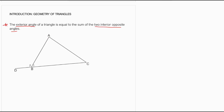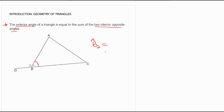The theorem says the exterior angle of a triangle is equal to the sum of the two interior opposite angles. Let's talk about B1. B1 is adjacent to B2. And then the interior opposite angles are angle A and angle C — these are the interior opposite angles. So B2 is equal to angle A plus angle C.